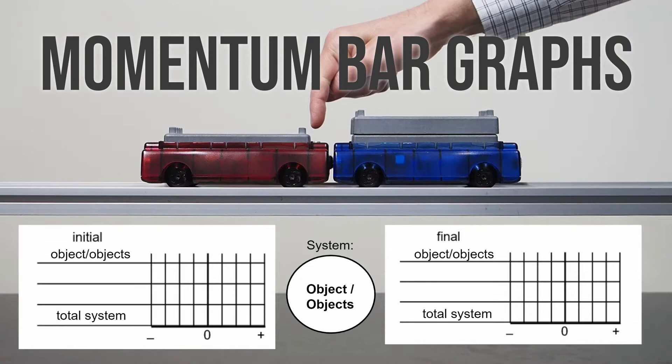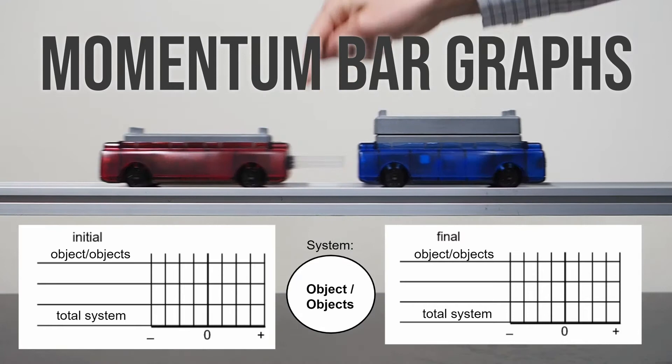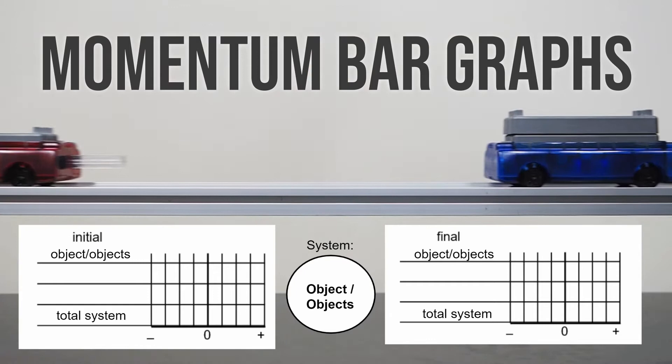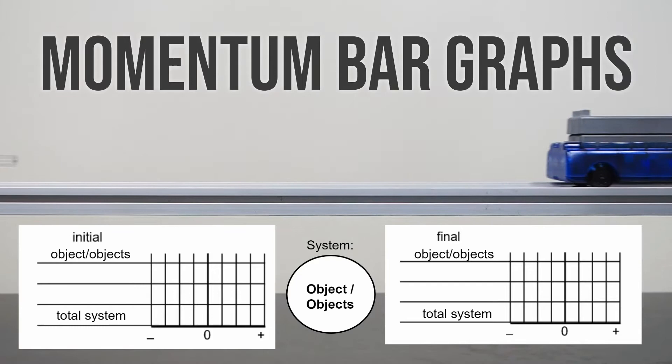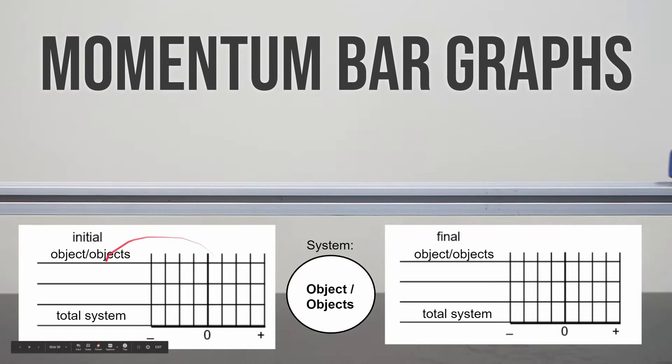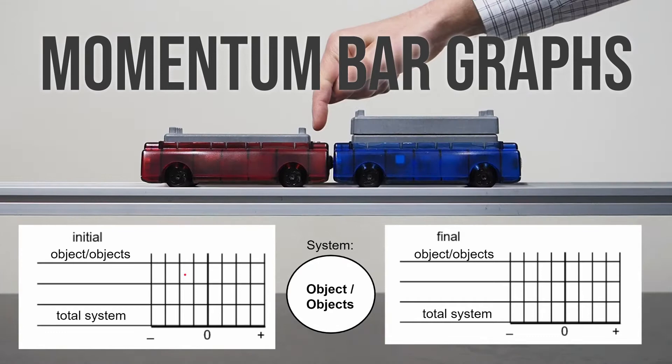In this video I want to introduce a new representational tool that we're going to use to think about what's happening with the momentum of an object during some kind of an event, or the momentum of a system of objects in that event. It's going to feel really similar to how we thought about situations involving energy and energy conservation, but instead of thinking about energy and the change in energy or work, we're going to be thinking about the momentum and the change in the momentum of a system, which we call the impulse.